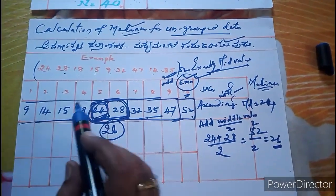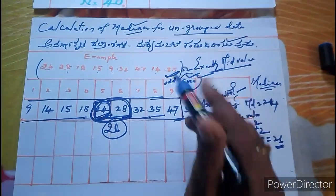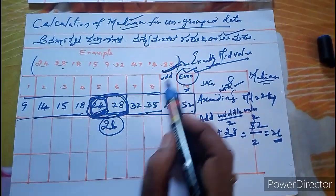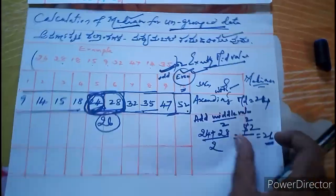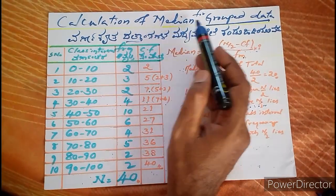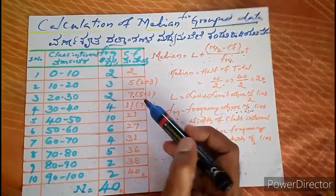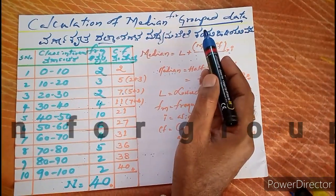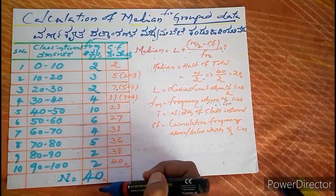For even numbers — 2, 4, 6, 8, 10, and so on — you get two middle values. But for odd numbers — 1, 3, 5, 7, and so on — you get exactly one middle value. This is the calculation of median in the case of ungrouped data. Next, the calculation of median for grouped data.